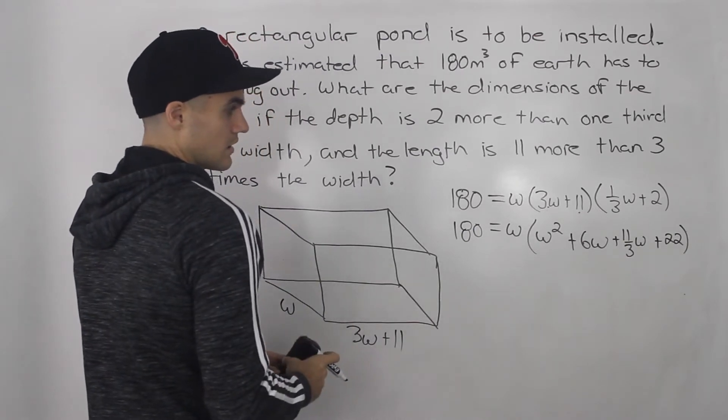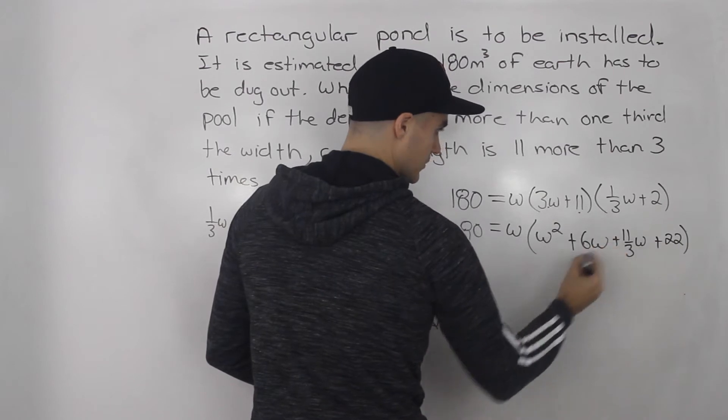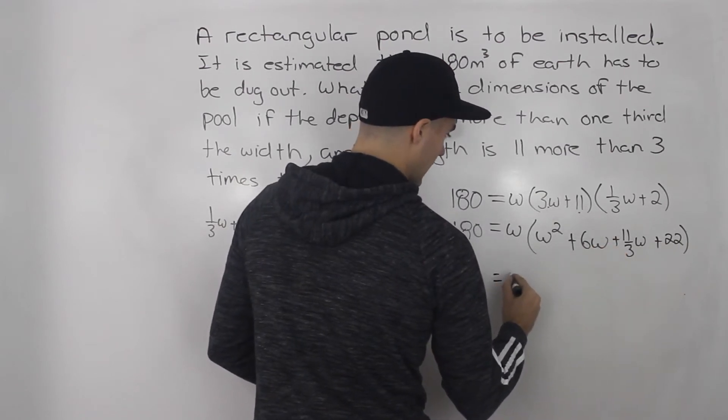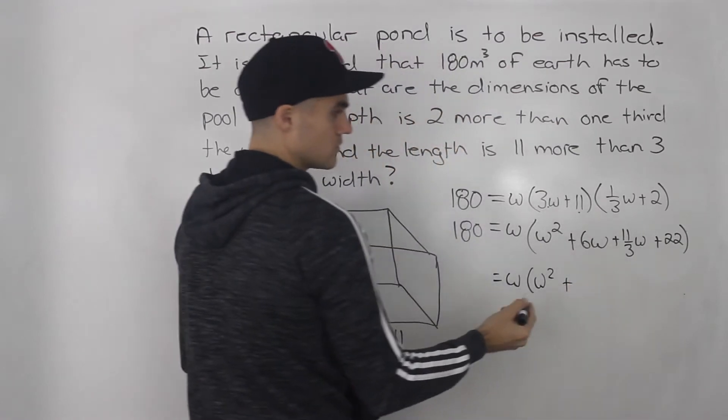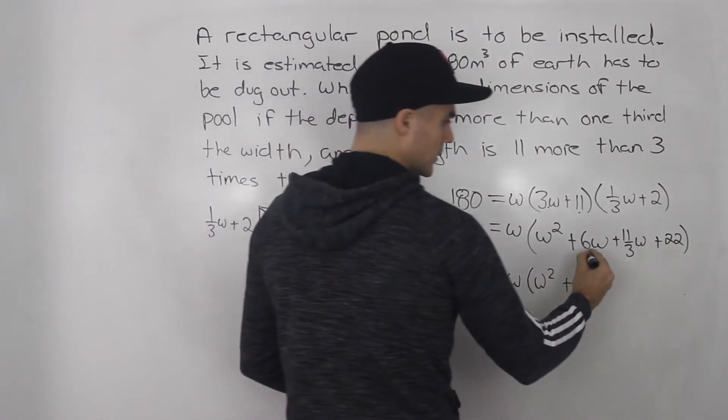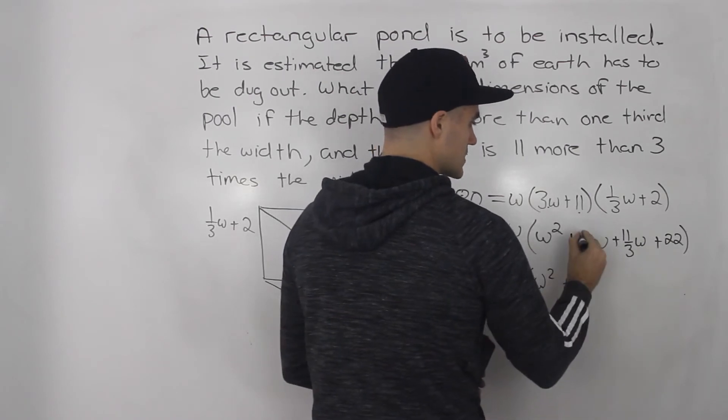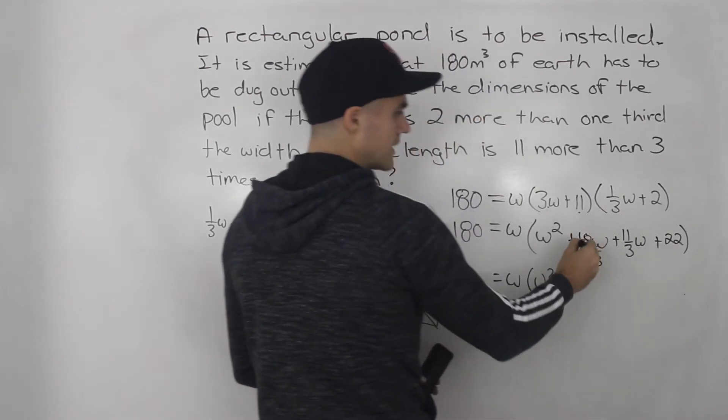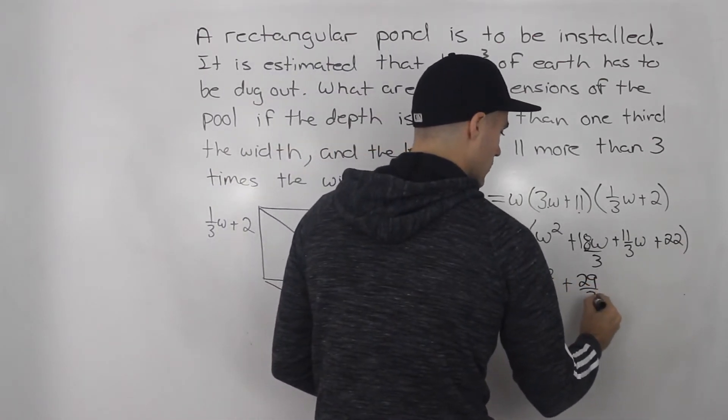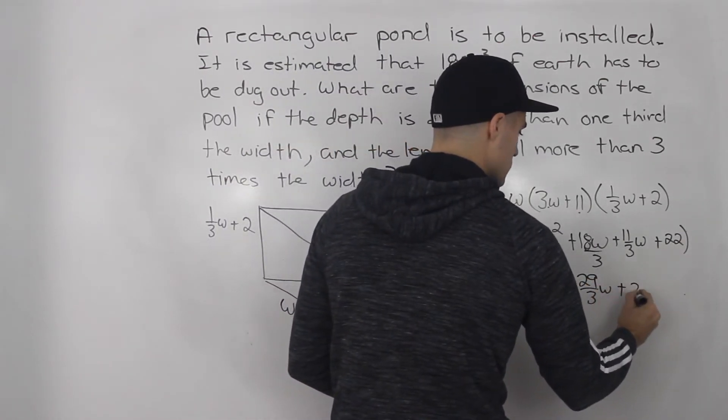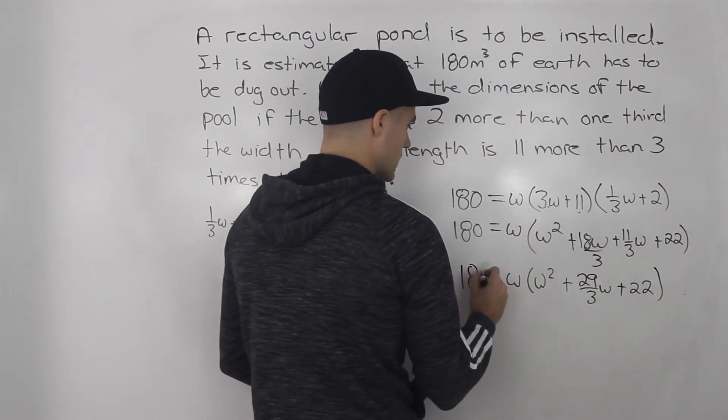And then we still have 180 here on the left side. Now my suggestion is that we can take these two terms, six w plus 11 over three w, and add them up. So the six w, we would have to get a common denominator. So this would be over three, and then this six we would turn into 18. So 18 w plus 11 w, that gives us 29 over three w plus 22. And that is 180.